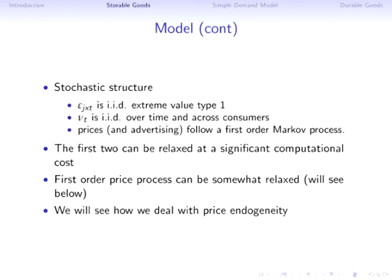Let me propose a model of consumer stockpiling. The key thing I want to show is what the challenges are and how the literature has addressed them. We start with the utility the consumer gets from consuming at time t — a function of c_t, a vector of consumption across all J products, plus shocks to consumption v_t that change marginal utility, plus a numeraire term m_t representing all other goods.